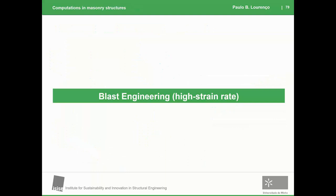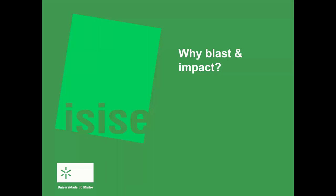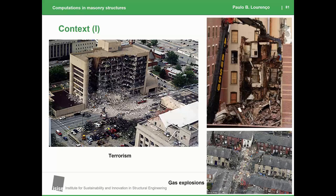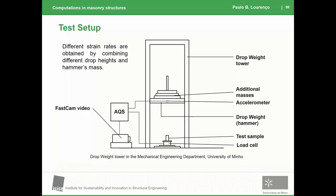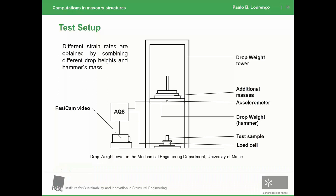I'd like to show a different application: blast engineering, a very high strain rate problem. Why blast and impact? There are many reasons, from terrorism to gas explosions to impact from different sources. Masonry is also affected by this, and a key issue is industry — many industries are prone to suffer an explosion. This changes everything we know about static and seismic loading because the strain rates are so high that the material properties change, and the tools we use for analysis are also different. There is very limited information for masonry. Here are some examples of what we do using a drop-tower to characterize the behavior of masonry at very high strain rates.